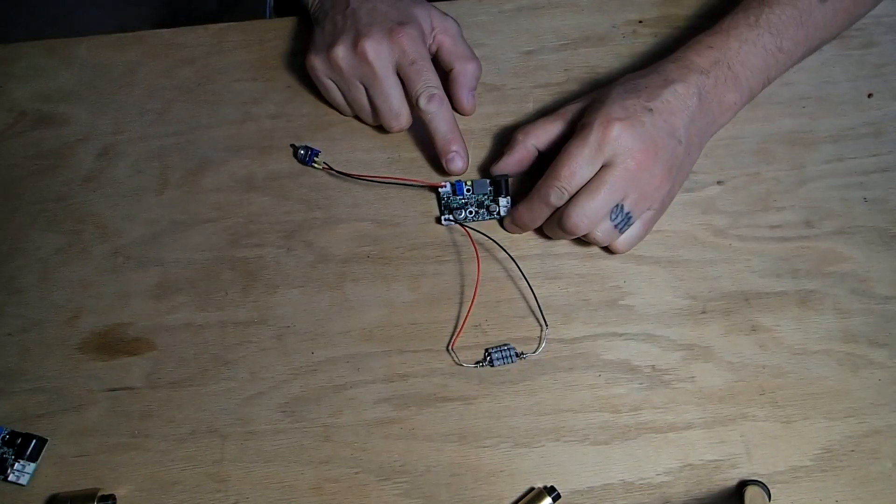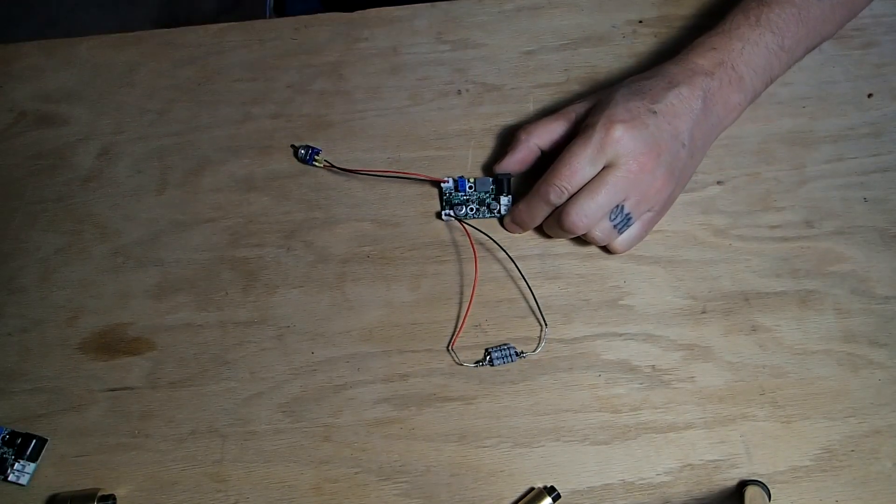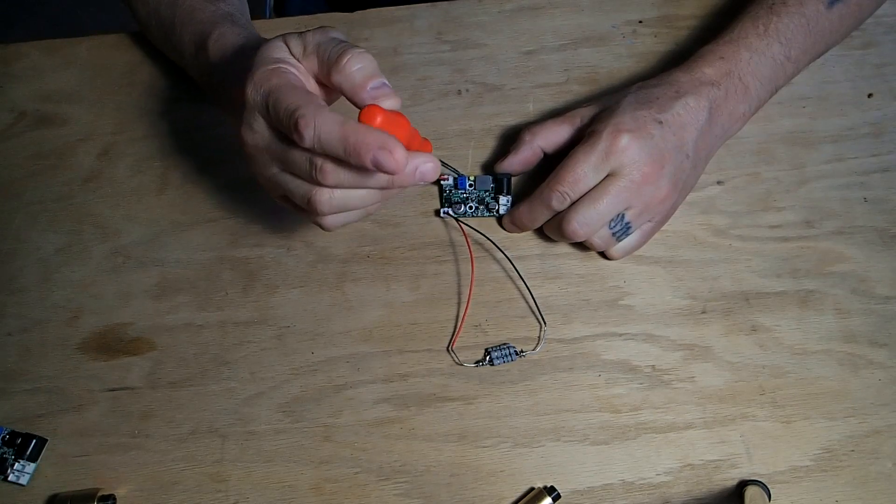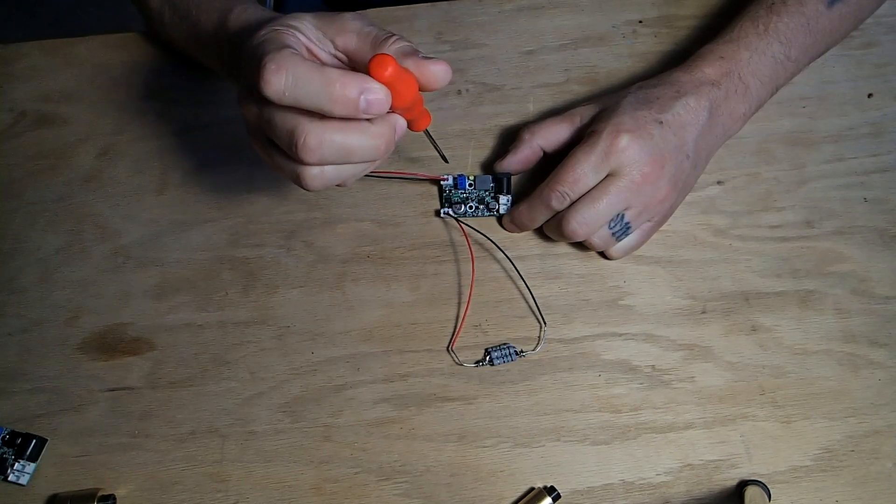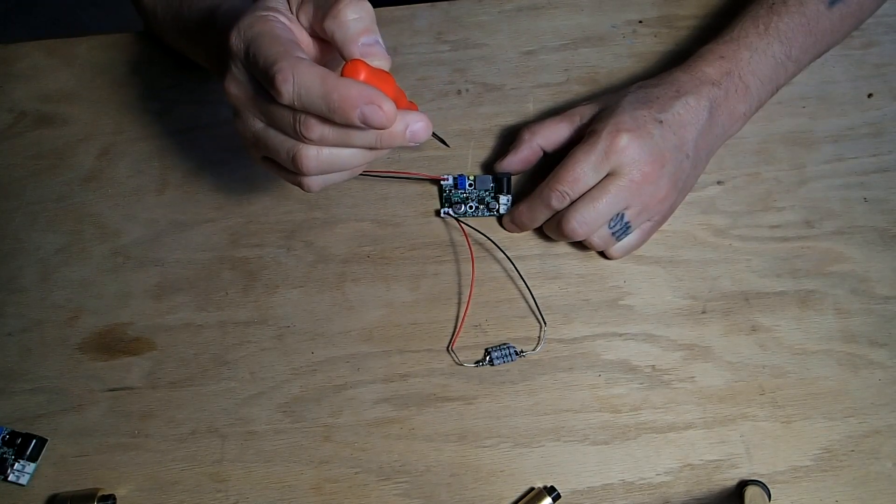To set the current on these you simply adjust this little screw with the screwdriver. Like so. You turn it clockwise to turn the current up, counterclockwise to turn the current down.